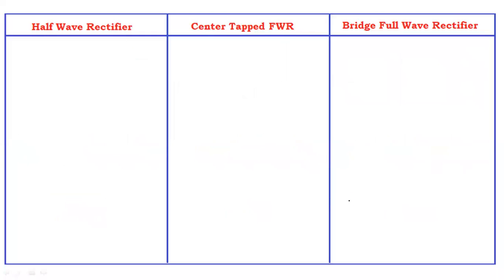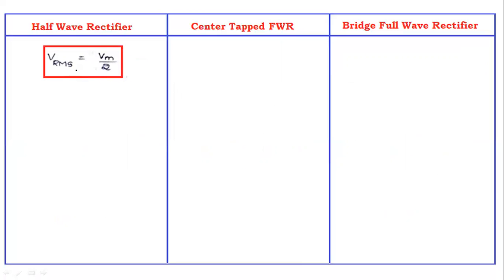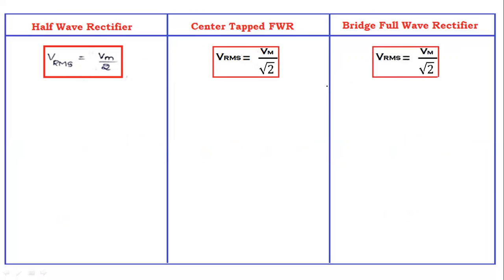For the RMS values: the RMS value of the half wave rectifier is Vm/2. The RMS value of the center tapped full wave rectifier is Vm/√2. The RMS value of the bridge full wave rectifier is also Vm/√2. So the center tapped and bridge rectifiers share the same RMS value.